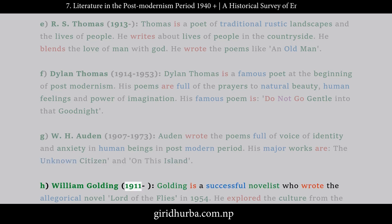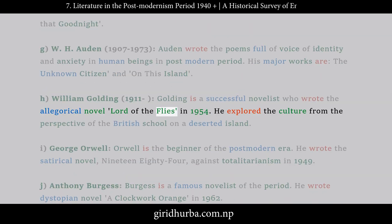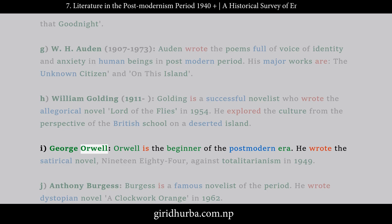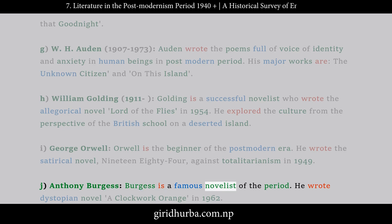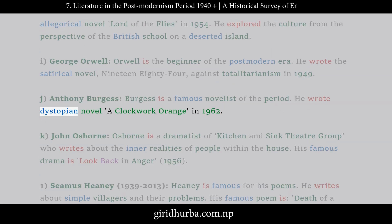H. William Golding (1911–): Golding is a successful novelist who wrote the allegorical novel Lord of the Flies in 1954. He explored the culture from the perspective of British schoolboys on a deserted island. I. George Orwell: Orwell is the beginner of the postmodern era. He wrote the satirical novel 1984 against totalitarianism in 1949. J. Anthony Burgess: Burgess is a famous novelist of the period. He wrote the dystopian novel A Clockwork Orange in 1962.